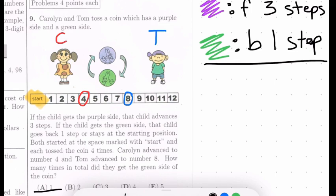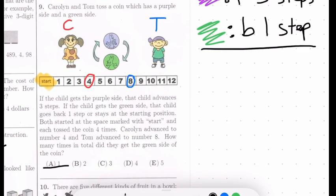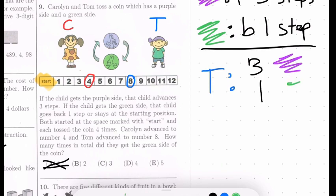Let's try out a few of the answer choices. Let's say in total they got one green side. If Caroline got one green, that means the other three times she tossed the coin she got purple. That can't be true. That means Caroline went forward three times three, which equals nine steps, and went back one, which is eight. Caroline only got to number four. But Tom did get to number eight. Three times three is nine minus one is eight, so that works for Tom. But that means Caroline got all of her tosses as purple, and that cannot work. So A is gone. But now we know that Tom got one green.